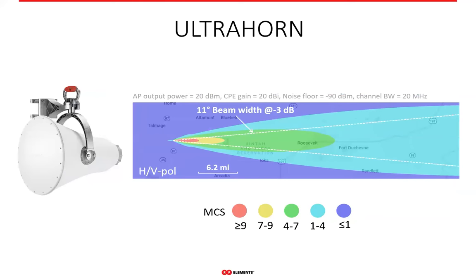Here is the ultra-horn — no side lobes whatsoever. Just a single beam, and that's it. It behaves in a similar manner as the flashlight example shown previously, providing very clean coverage with no side lobes creating unwanted coverage areas. Moreover, its performance is identical in both polarizations, which is why we only show one plot — the coverage is identical for both horizontal and vertical polarizations.